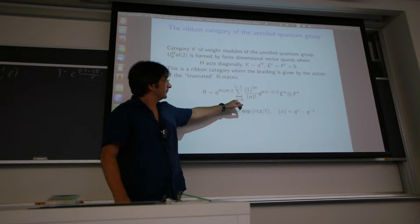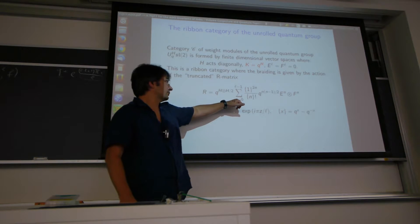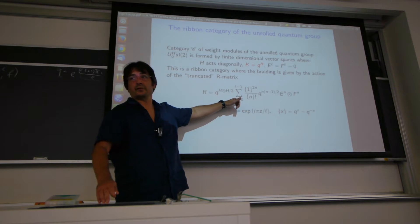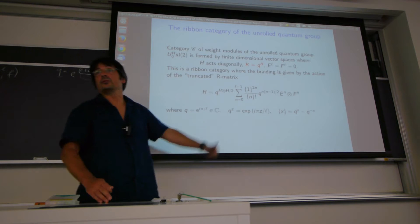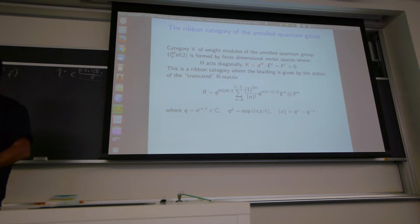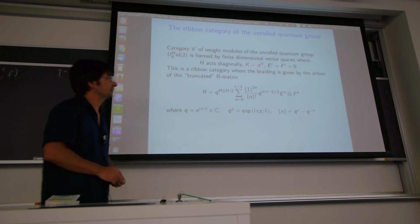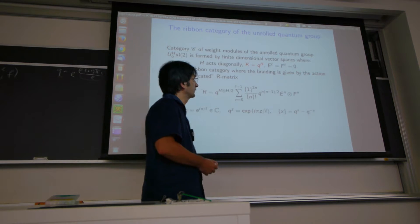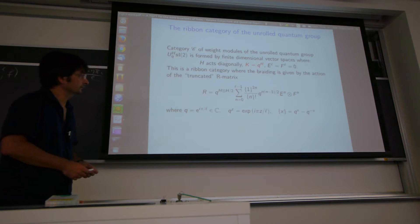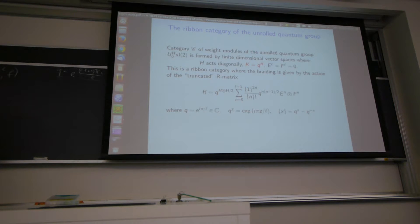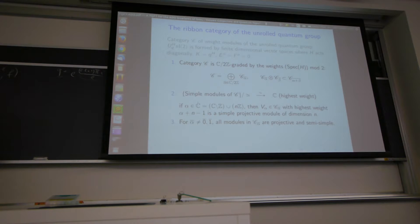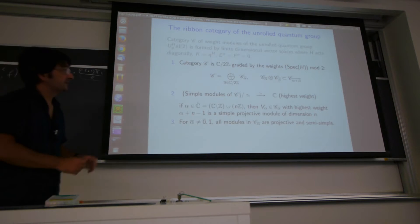This category is ribbon, where the braiding is given by the action of the truncated R-matrix on the modules. The element Q^{H⊗H} is well defined on representations of the unrolled quantum group since I know the action of H — it's the exponential of a matrix. One point is that it's a truncated matrix because the original R-matrix of Drinfeld has an infinite sum, and at roots of unity you get a denominator that vanishes.